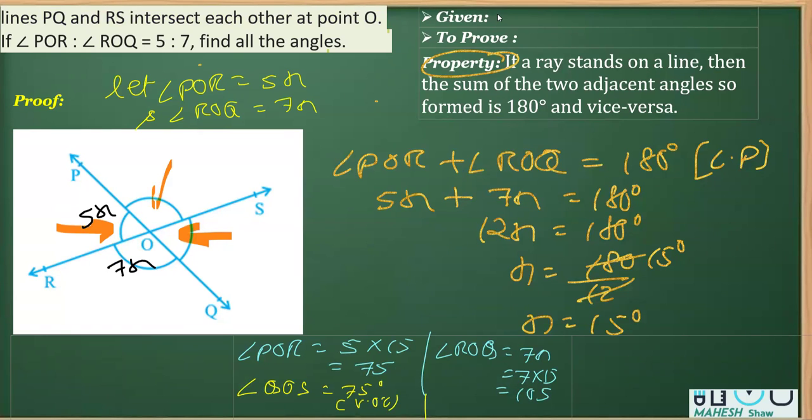So since we know ROQ, we can say angle POS is equal to same as ROQ, that is 105 degrees. This is how this question can be done.